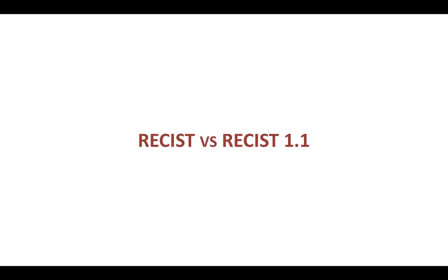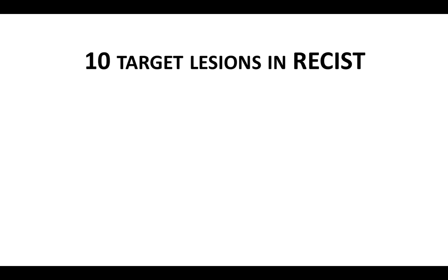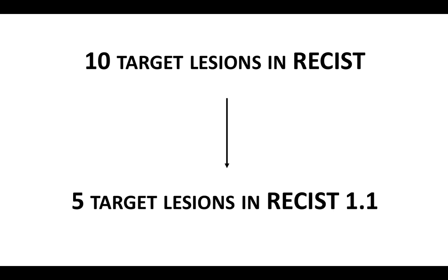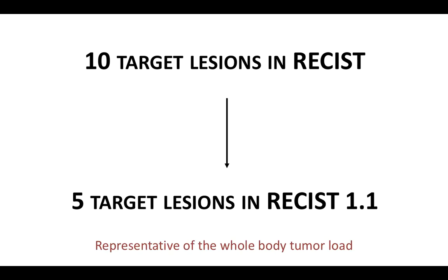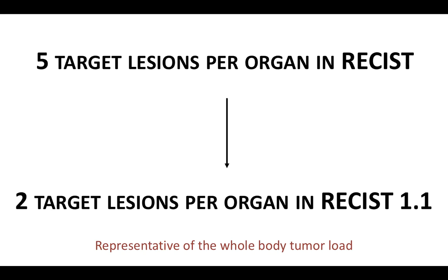What is the difference between RECIST and RECIST 1.1? The major difference was a reduction in the number of target lesions. While RECIST insisted on up to 10 target lesions, in RECIST 1.1 we can select only a maximum of five target lesions. This is because we assume that the target lesions are representative of the whole body tumor load — so if these five target lesions show response, we assume the rest of the tumor burden also shows response.